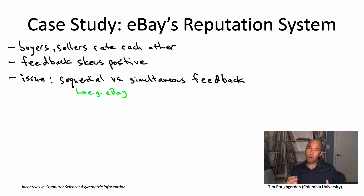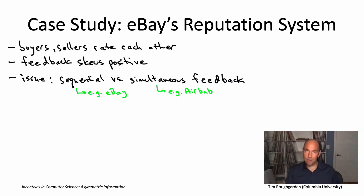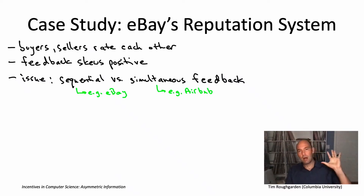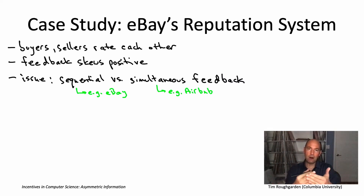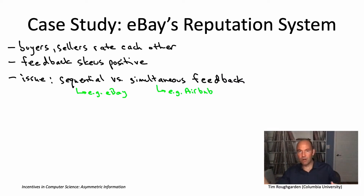A different approach is simultaneous feedback, which Airbnb adopted a few years ago after previously using sequential. With simultaneous feedback, both parties get a window — say a week after the transaction — to submit their feedback, but the other party doesn't immediately find out what it says. Once both have entered their feedback, both sets are released simultaneously. If the window expires with only one side having responded, that feedback is released at expiration.